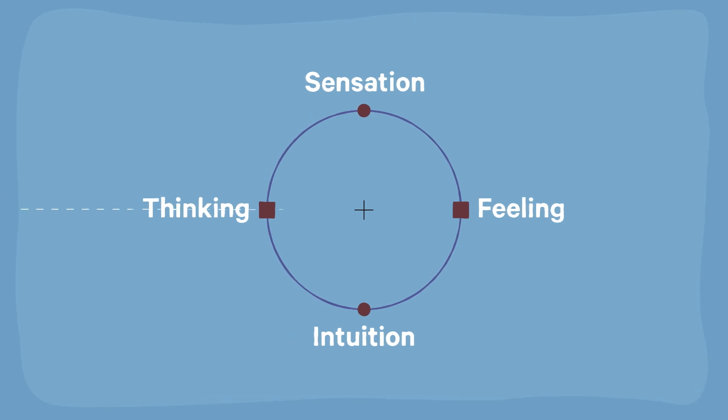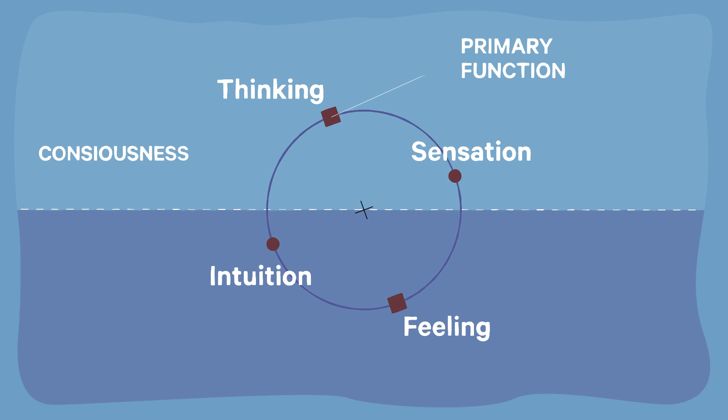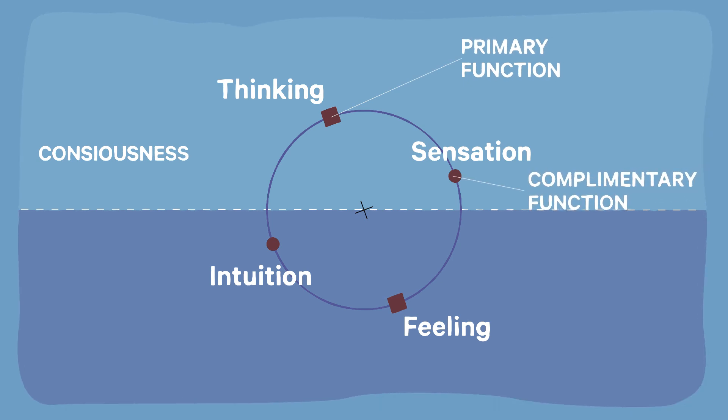These four functions, or psychological equipments, are shared by everyone. But we differ from each other based on our ego's preferred combination of functions. While one particular function is the primary one, there is another complementary one for balance.